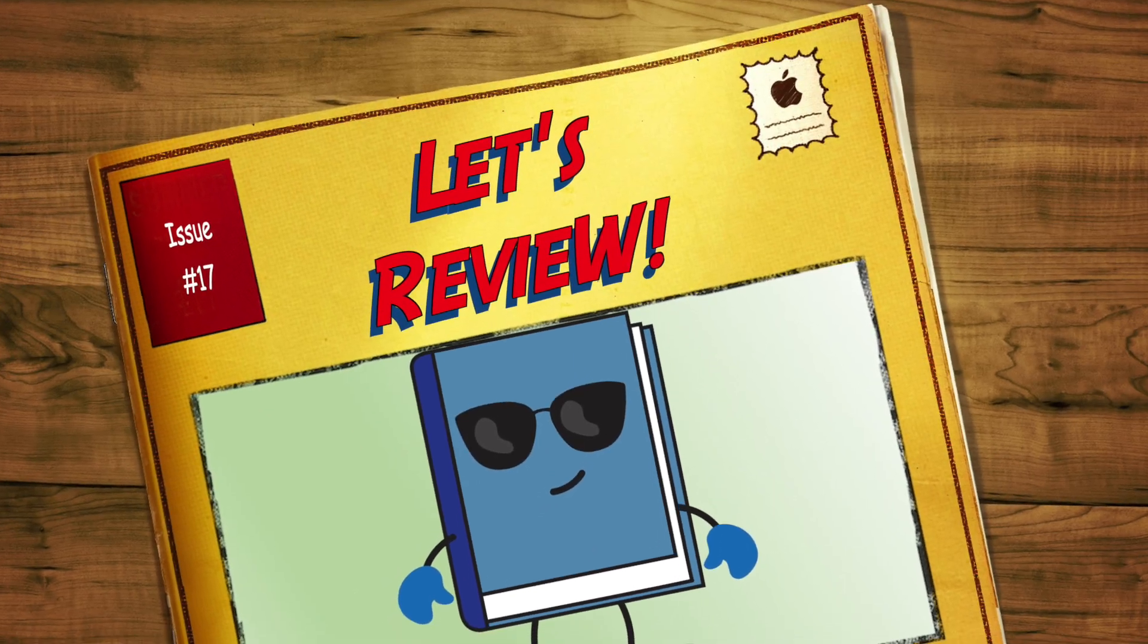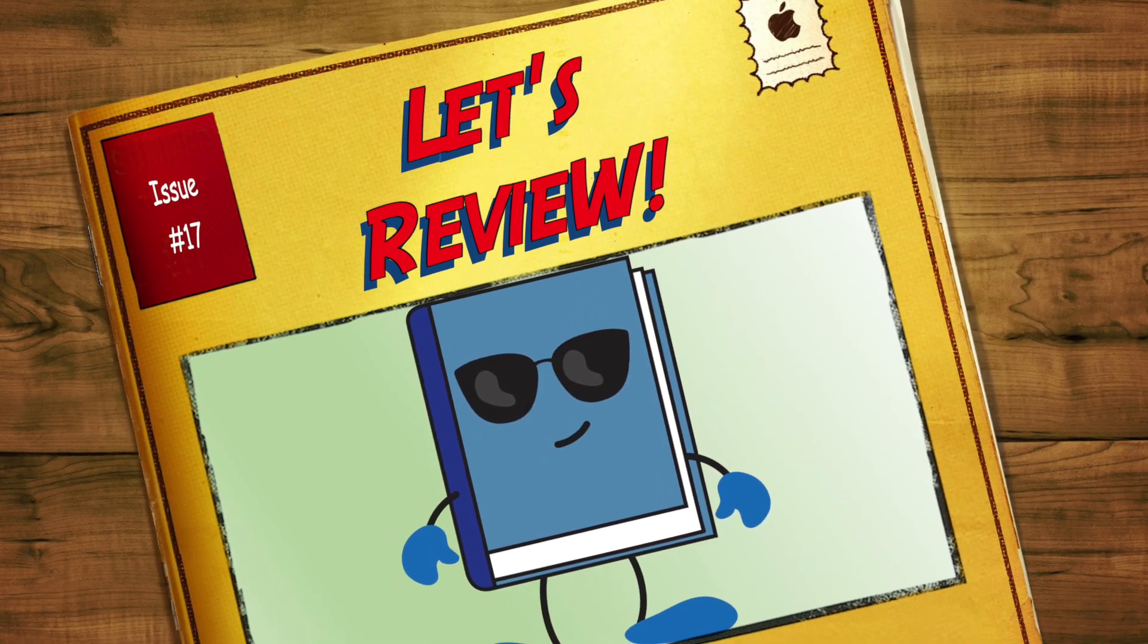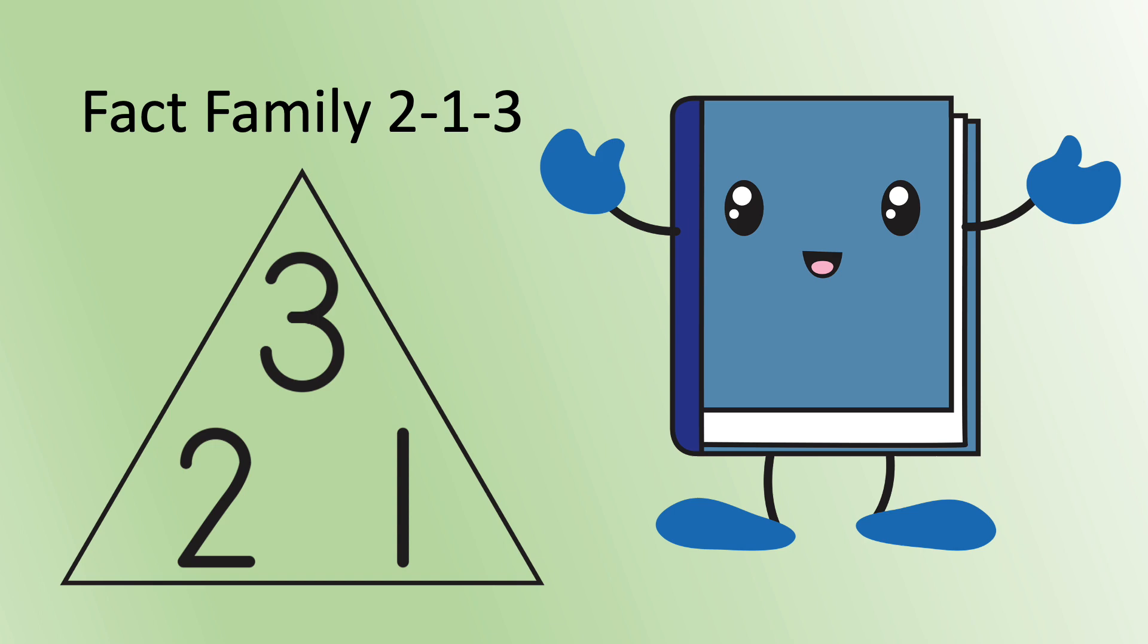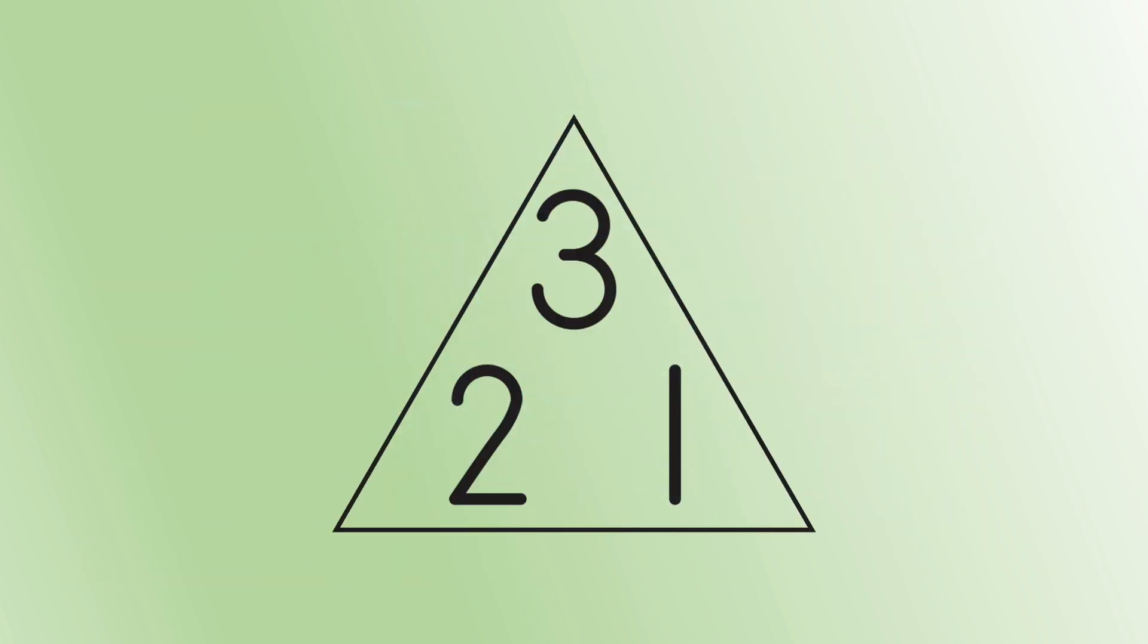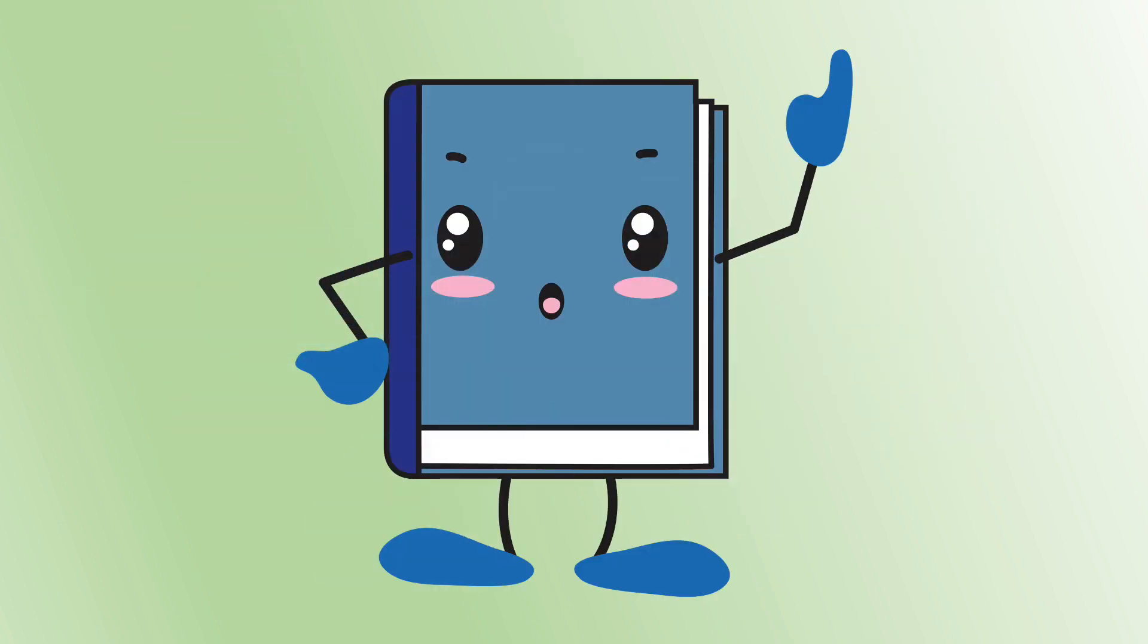Let's review what Baxter discovered. A fact family is a group of numbers that go together to make addition and subtraction number sentences. A fact family triangle helps us to find these number sentences. And with the family 2, 1, 3, we get four number sentences.